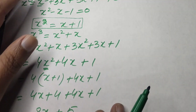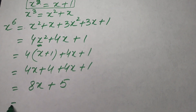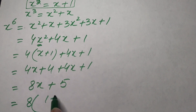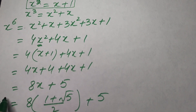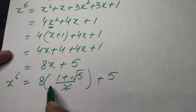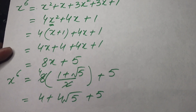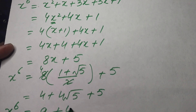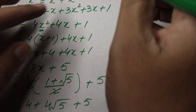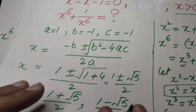We already found x = (1 + √5) / 2. Substituting into 8x + 5 gives 8 · (1 + √5)/2 + 5. The 2 cancels with 8 to give 4, so we get 4 + 4√5 + 5, which equals 9 + 4√5. Therefore x⁶ = 9 + 4√5.